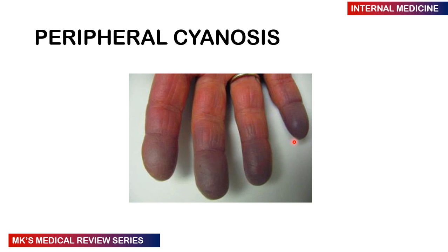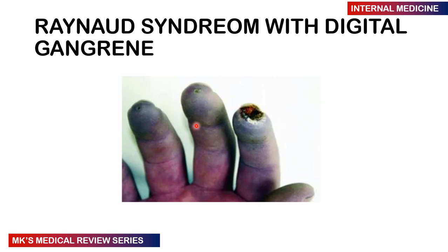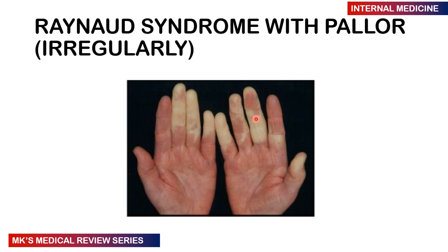This is peripheral cyanosis that may be seen with Reynolds phenomenon — you can see the tips here are discolored with a bluish discoloration. You may also see digital gangrene, where these three fingers appear gangrenous, especially the index finger. This image shows Reynolds syndrome with pallor — the three digits are pale, and you can see part of the thumb is also affected, though that is not a common presentation. There is this irregular pallor that we are seeing.